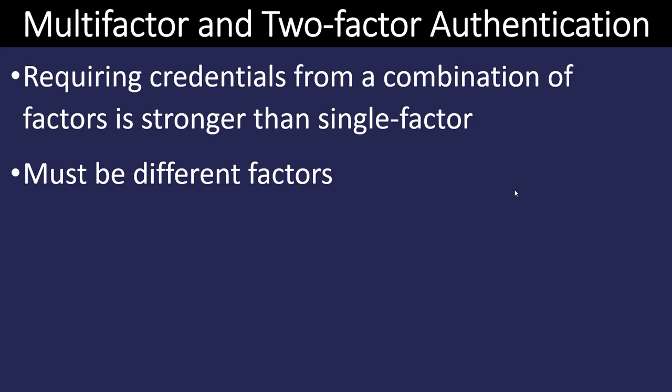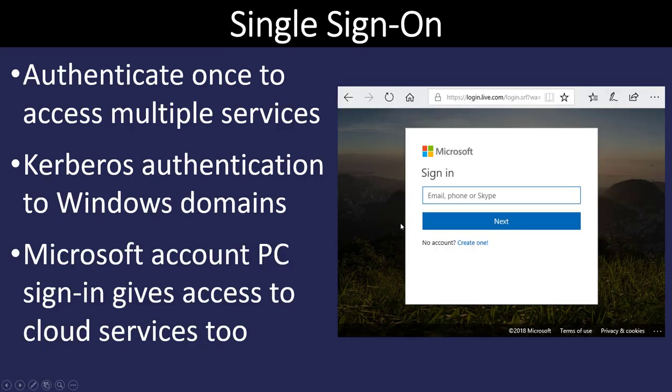When we combine multiple authentication methods together, that's where we get two-factor or even three-factor authentication. The more factors we have, the less likely it is that an unauthorized user is going to get onto the system. Single sign-on is popular right now — the user only has to authenticate once to have access to multiple resources, instead of re-logging in each time they want a different database or resource. We see this frequently on the web with Microsoft and Google. If we're doing it locally, we use something called Kerberos on a Windows domain.